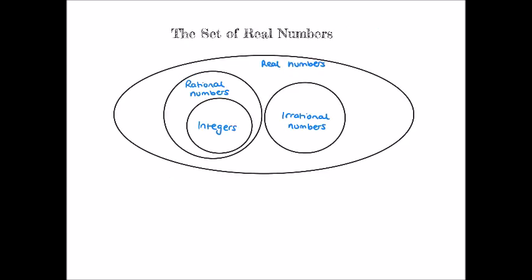Each of these types of number is contained in a set which we call the Real Numbers. The Real Numbers are the numbers that you're most used to working with, and they include rational numbers, irrational numbers, integers, negatives, and so on.